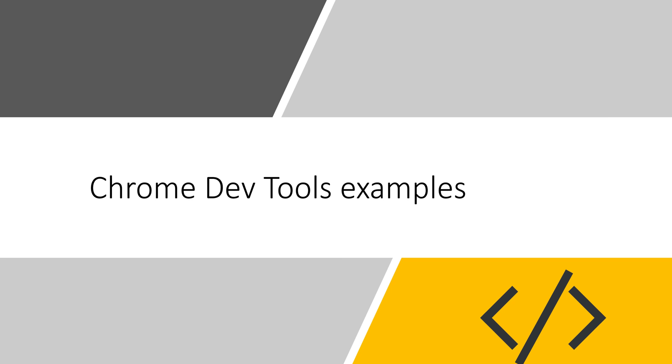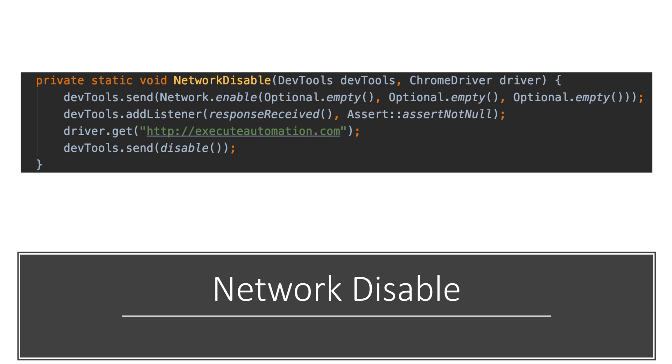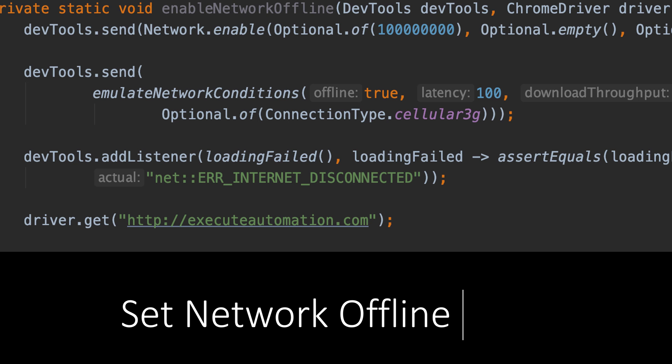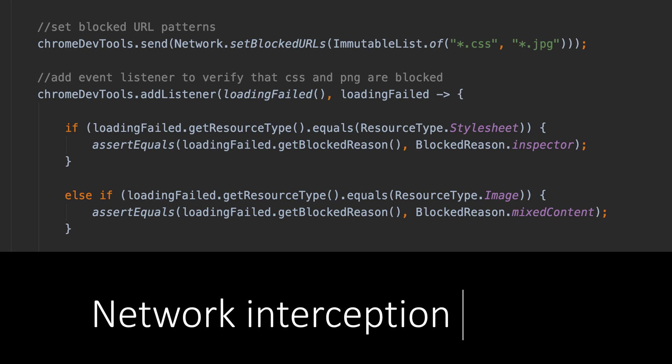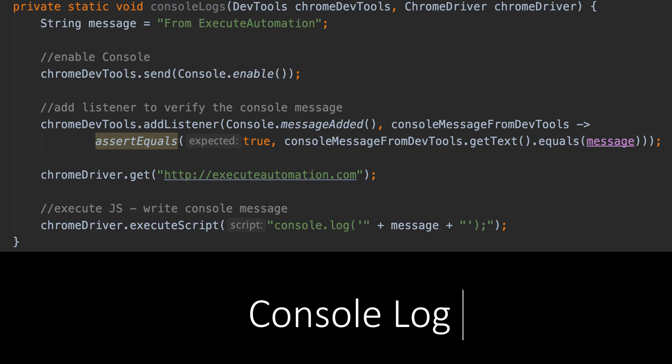We also discussed many different examples in Chrome DevTools — for instance, network disabled options, setting the network to offline while trying to access a page, and intercepting a network. We also discussed the console log that you can get from Chrome DevTools.